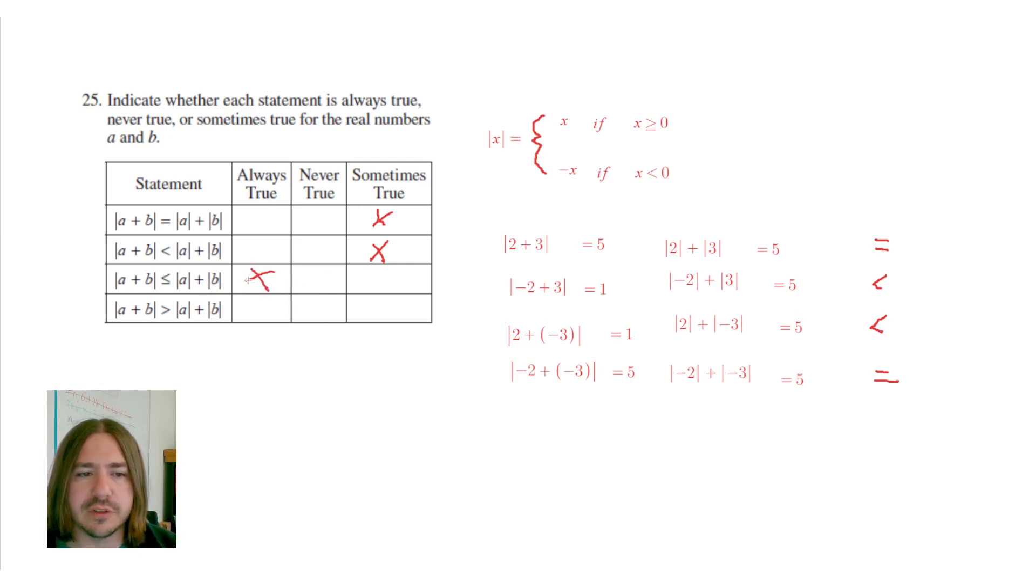So this is going to always be true. It's always going to be one or the other. It's never going to be greater than. There's no way for this right-hand column to be a smaller number than the left-hand column. So that's it for number 25. Thanks for watching, and y'all have a great day.